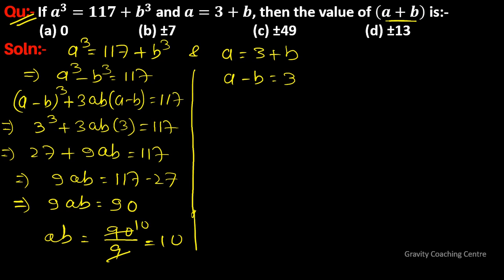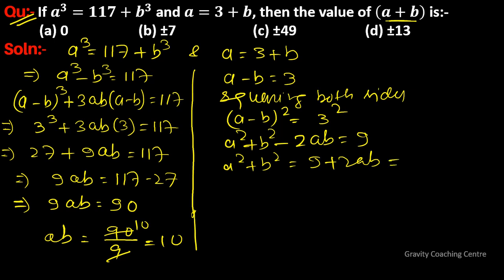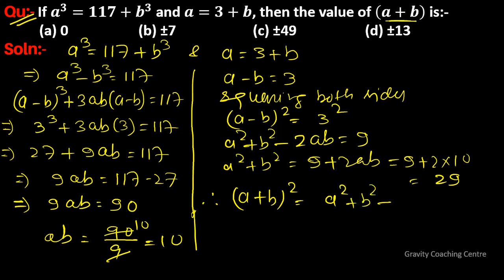Since a minus b equal to 3, squaring both sides: a² plus b² minus 2ab equal to 9, so a² plus b² equal to 9 plus 2ab, which is 9 plus 2 into 10, equal to 29. Therefore a plus b whole square equal to a² plus b² plus 2ab.